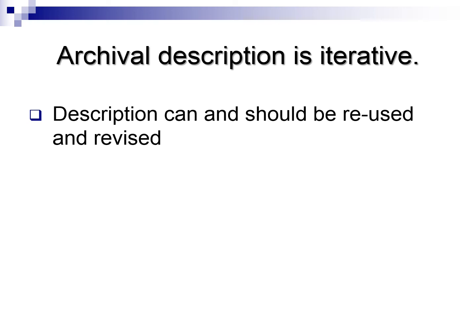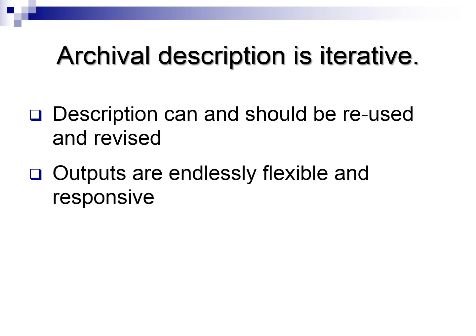For instance, you may initially describe a collection at the series level, but later revisit that description and expand it to the file level, given an increase in processing resources or user demand. Perhaps you initiate a crowdsourced project to get the audio files in your oral history collection transcribed. Perhaps additional information about a records creator is found after the initial description has been made. Or you take in a later accession to a body of records. In all of these cases, you are revisiting your description with new information. As long as new description also follows DACS's advice, the outputs of your description program are endlessly flexible and responsive to your current needs. Description should always be considered a base on which to build and strengthen access to records.